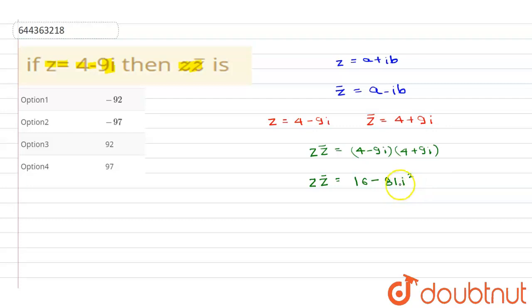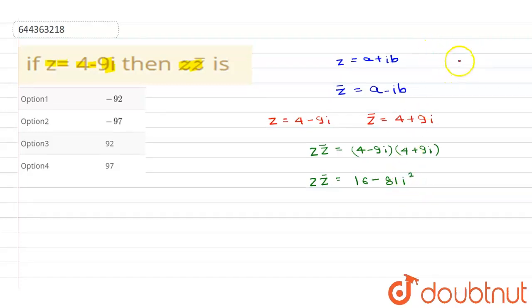i square now we know that i square is equal to minus 1 because i is equal to under root of minus 1, therefore i square will be minus 1.